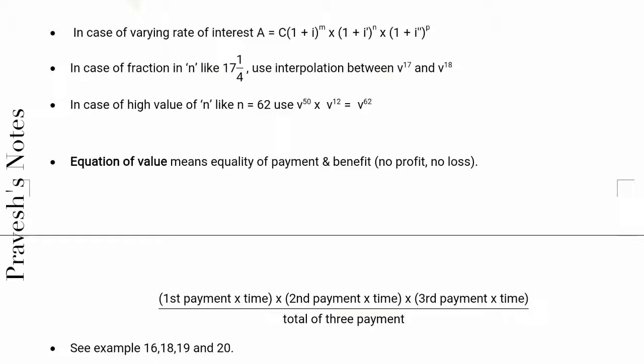In case of fraction in n like 17 and 1/4, use interpolation between v^17 and v^18. In case of high value of n like n = 62, use v^50 × v^12 = v^62.